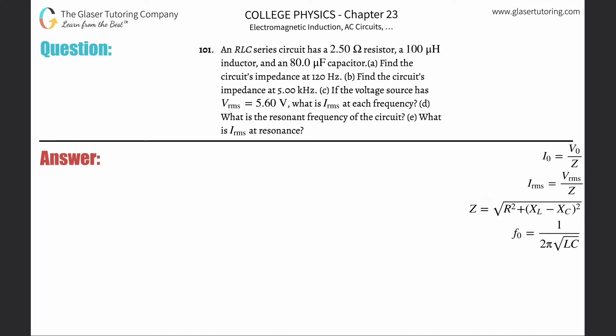Number 101. An RLC series circuit has a 2.5 ohm resistor, 100 microhenry inductor, and an 80 microfarad capacitor. Letter A: find the circuit's impedance at 120 kHz.